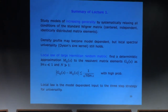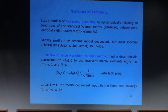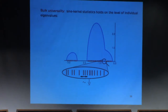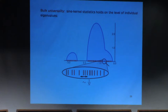The local law is the only part which is model dependent. Nowadays you have to prove local laws, and then you can take existing theorems off the shelf which eventually prove local universality as well. The local law establishes that the empirical density of eigenvalues is approximated by a deterministic density, and this approximation holds on the smallest possible scale — just a little bit bigger than the eigenvalue spacing.